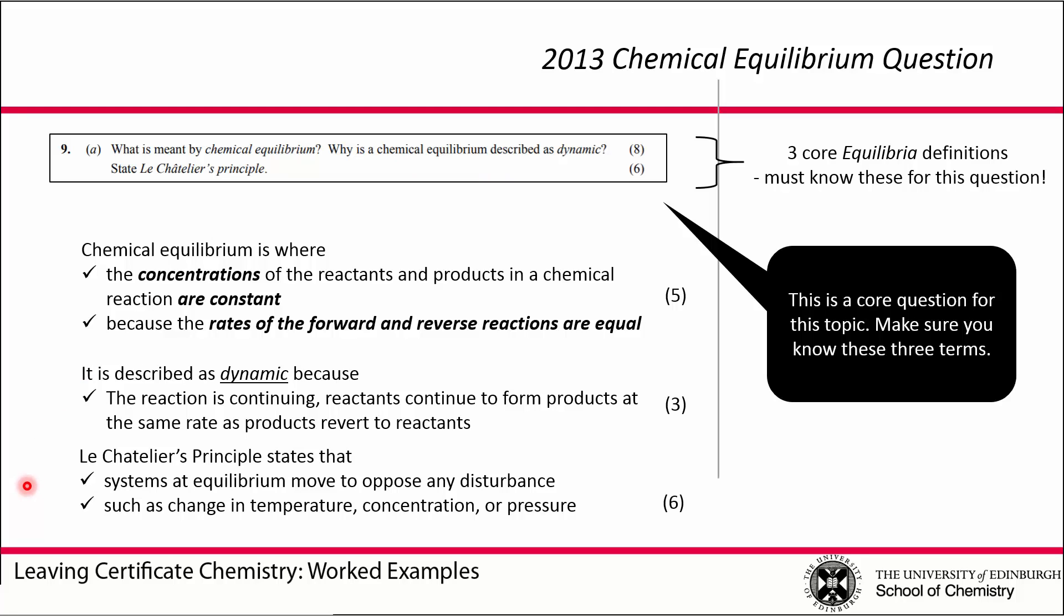Le Châtelier's Principle says that because an equilibrium is a low energy state for a reaction, if we try and move it out of that, the system will try and shift so that it restores to that state. Le Châtelier's Principle states that systems at equilibrium move to oppose any disturbance, such as temperature change, concentration change, or pressure change.